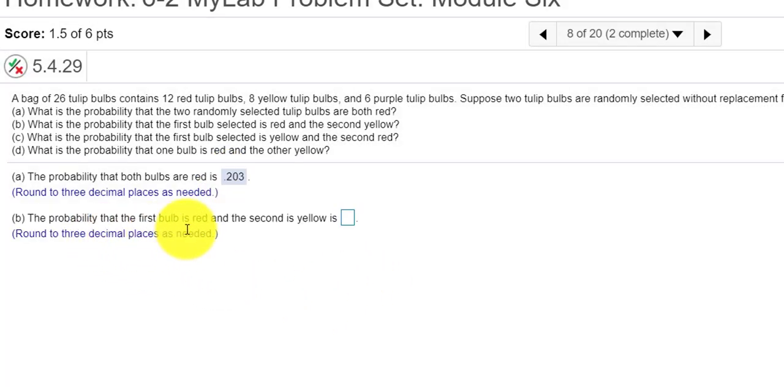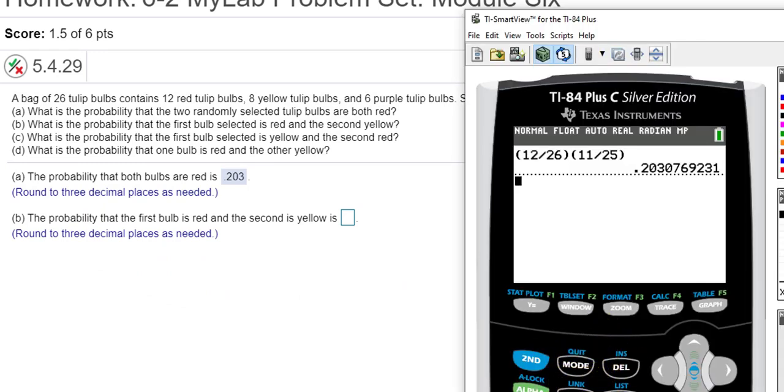Now it says, what's the probability that the first is red and the second is yellow? Okay, so the probability that the first is red is still that 12 out of 26, 12 red out of 26.